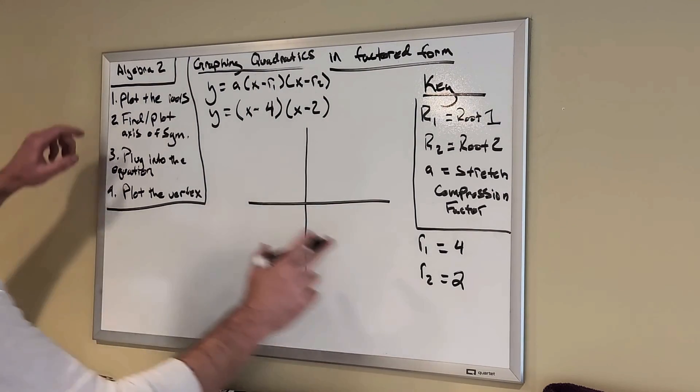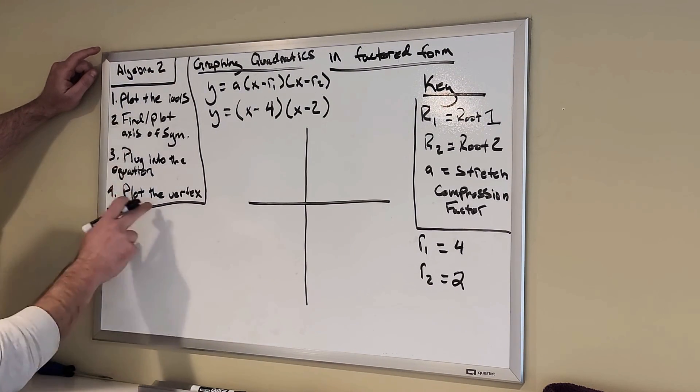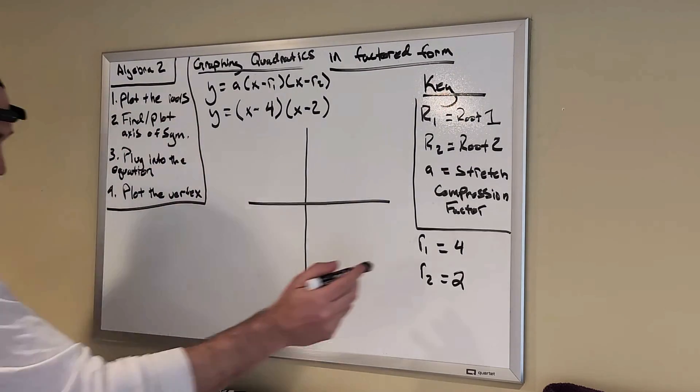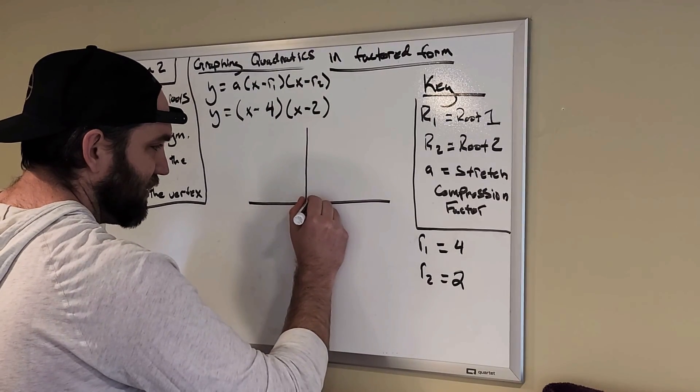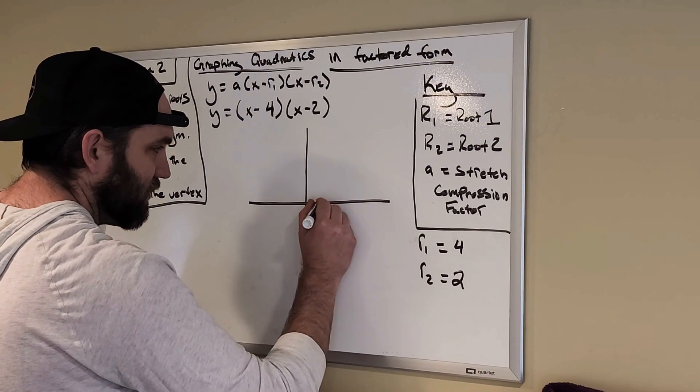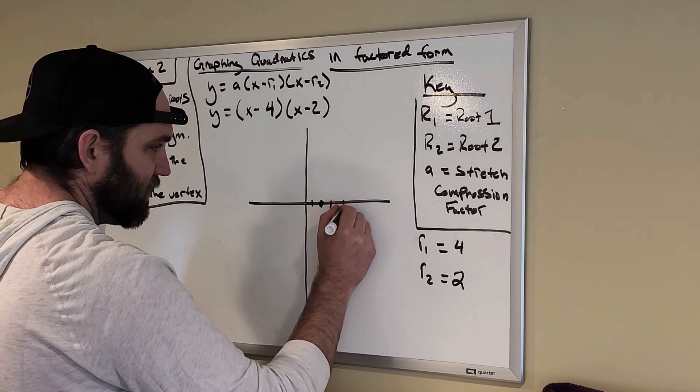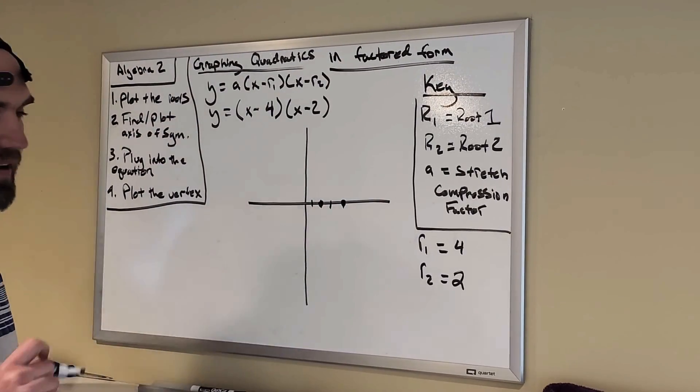So, I put a little cheat sheet over here to kind of follow along what we're going to be doing. So, the first thing I want to do is plot my roots. I know what my roots are, 4 and 2. I just plot them right on the x-axis. So, 1, 2. So, here's going to be 1 root. That's 3. That's 4. So, we have 2 and 4 are my two roots.